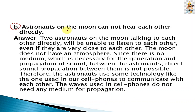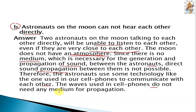Question B. Astronauts on the moon cannot hear each other directly. The reason is: two astronauts on the moon talking to each other directly will be unable to listen to each other, even if they are very close. The moon does not have an atmosphere. Since there is no medium, which is necessary for generation and propagation of sound between astronauts, direct sound propagation between them is not possible. Therefore, astronauts use technology like the one used in cell phones to communicate. The waves used in cell phones do not need any medium for propagation.